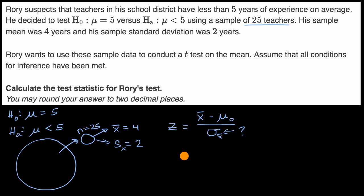And so that's why instead we do a t-statistic, in which case we take the difference between our sample mean and our assumed population mean, and we try to estimate this with our sample standard deviation divided by the square root of our sample size. If you're inspired, I encourage you to pause this video and try to calculate this t-statistic.